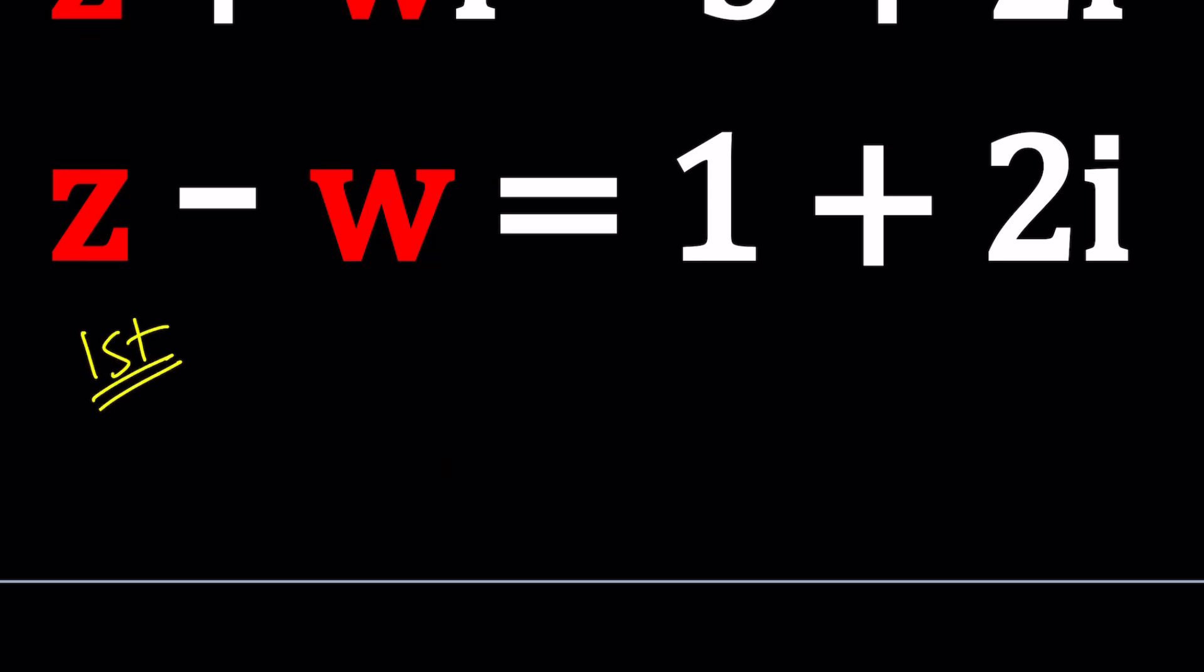For my first method, I'm going to replace Z with a plus bi for two reasons. Because it's a complex number, and second reason is it's the name of this channel, right? Obviously.